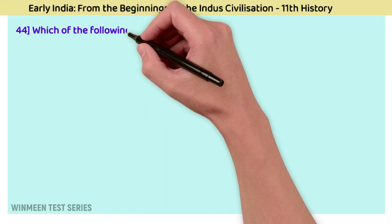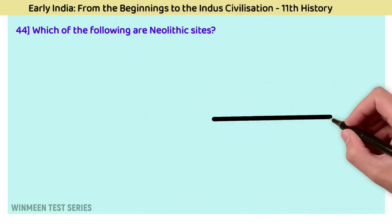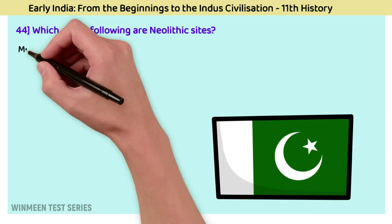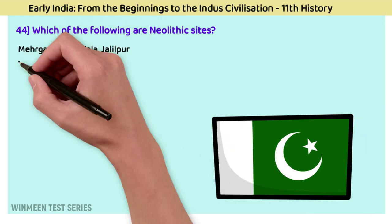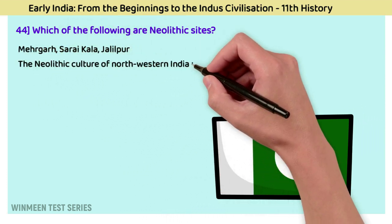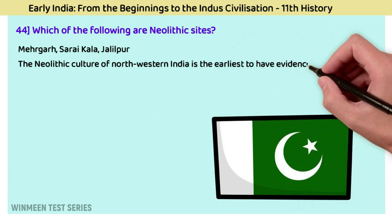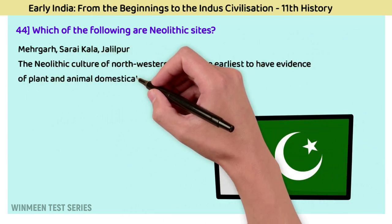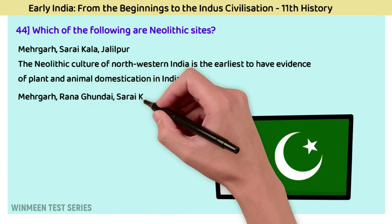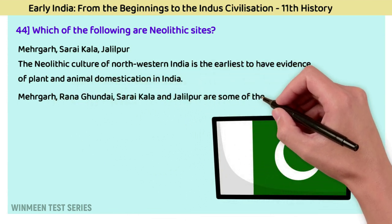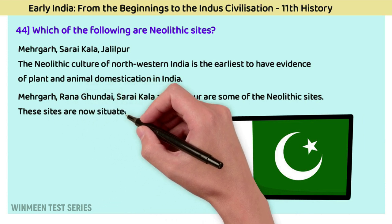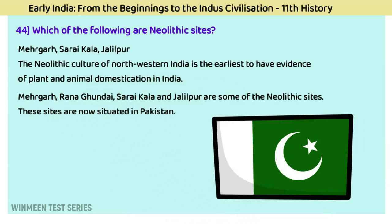Question 44: Which of the following are Neolithic sites? The answer is Mehrgarh, Sarai Kala, and Jalilpur. The Neolithic culture of north-western India is the earliest to have evidence of plant and animal domestication in India. Mehrgarh, Rana Ghundai, Sarai Kala, and Jalilpur are some of the Neolithic sites, and these sites are now situated in Pakistan.